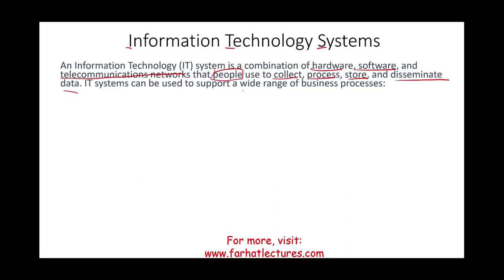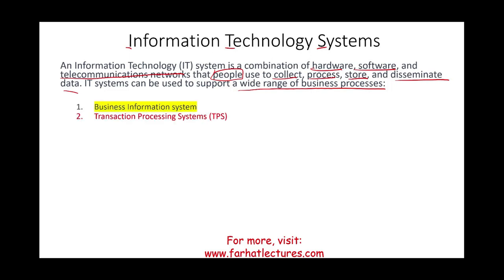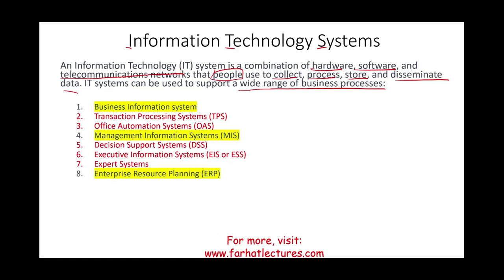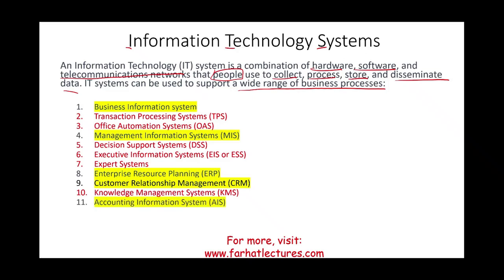IT systems can be used to support a wide range of business processes, and that's why we have many IT systems. In this session, we're going to review many parts of IT systems, such as business information systems, transaction processing systems, office automation systems, management information systems (MIS), decision support systems, executive information systems or executive support systems, expert systems, enterprise resource planning, customer relationship management, knowledge management systems, and accounting information systems.